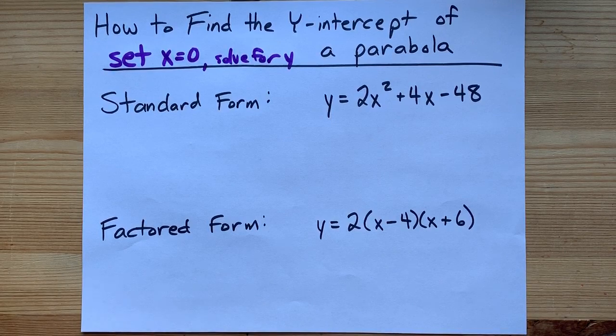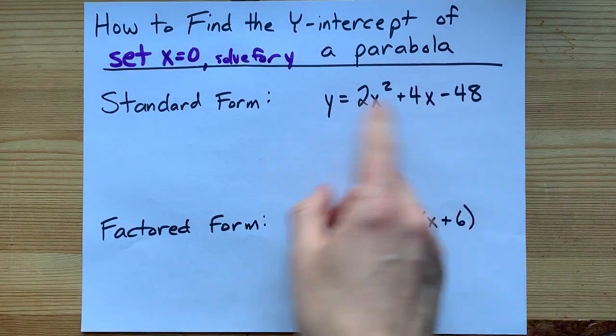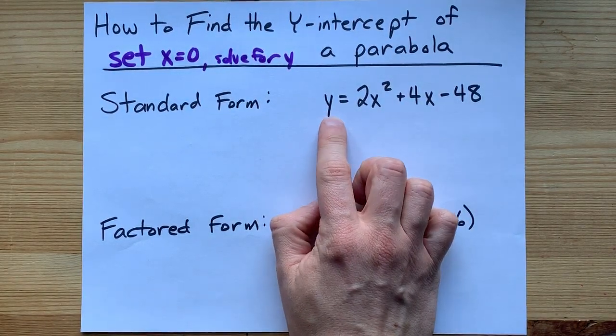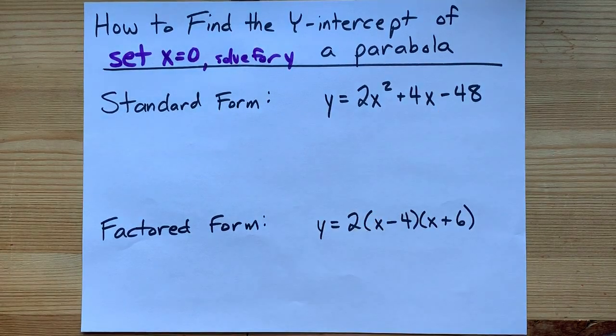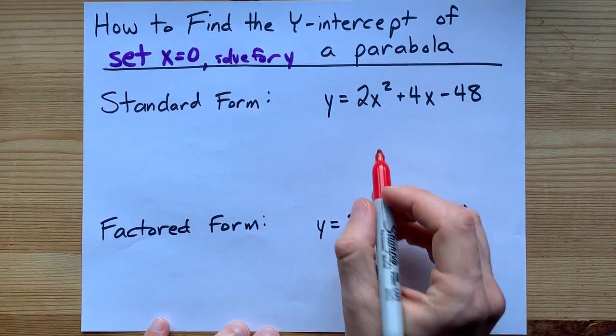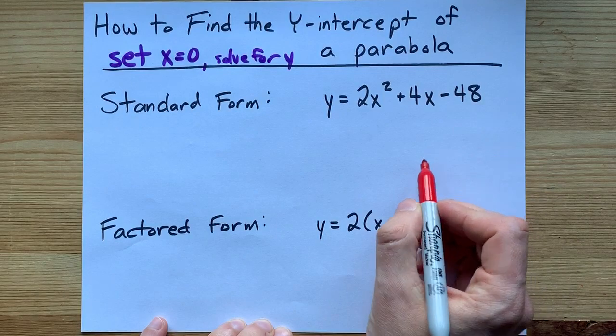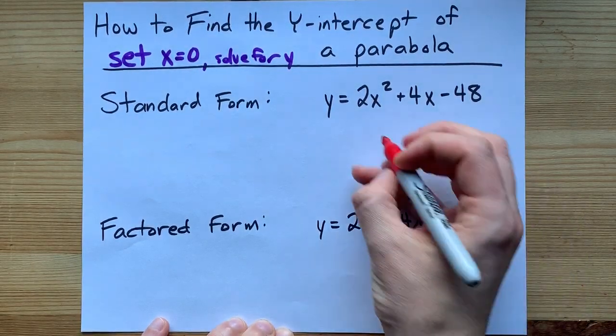Here's what I mean. If you're given the equation in standard form, for example, y equals 2x squared plus 4x minus 48, all you have to do is rewrite it, but everywhere that it says x, you write 0.